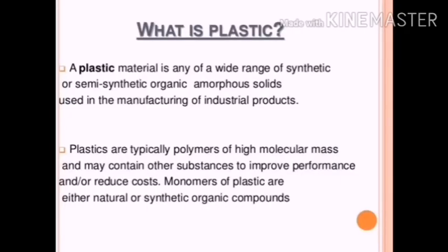For revision: a plastic material is any of a wide range of synthetic or semi-synthetic organic amorphous solid used in manufacturing industrial products. Plastics are typically polymers of high molecular mass and may contain other substances to improve performance or reduce cost. Monomers of plastic are either natural or synthetic organic compounds.